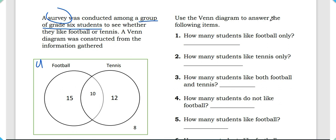Let's move to our questions. Question one: how many students like football only? The answer is 15, because there are 15 students that are not part of the intersection — these students only like football.